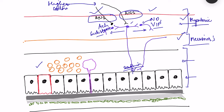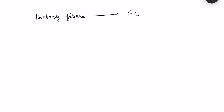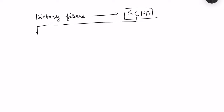Turning to enteroendocrine cells and neuropeptide signaling, the gut microbiome plays a huge role. One pathway involves the gut microbiome converting dietary fibers — undigested material in food — to short chain fatty acids. One of these, butyrate, works on the gut-associated immune system and is responsible for decreasing inflammation in the GI tract.